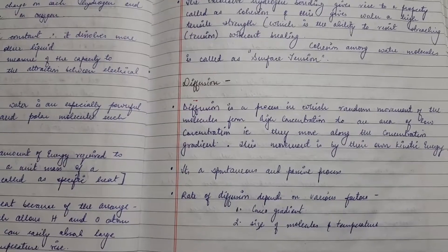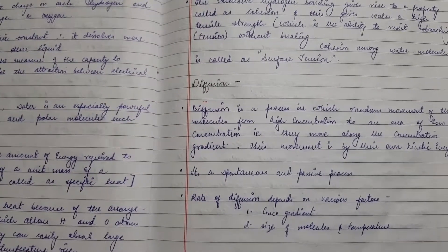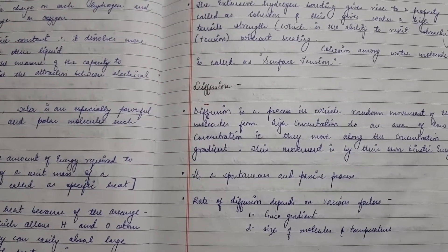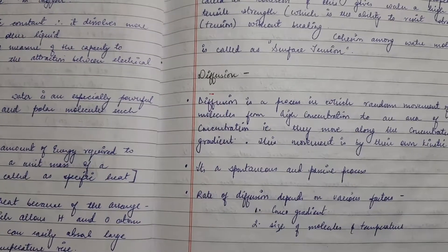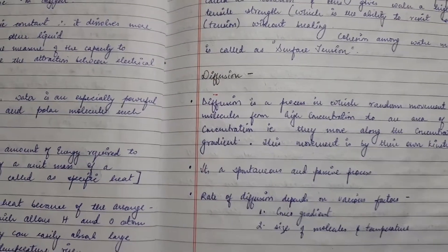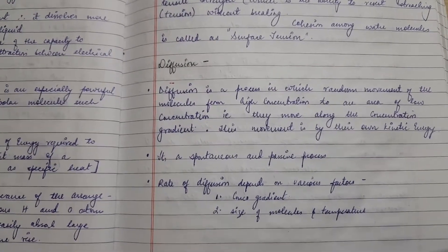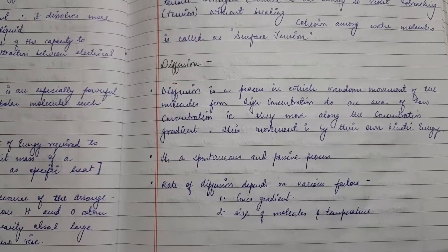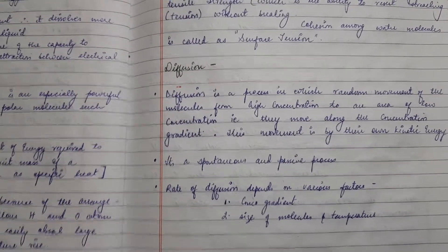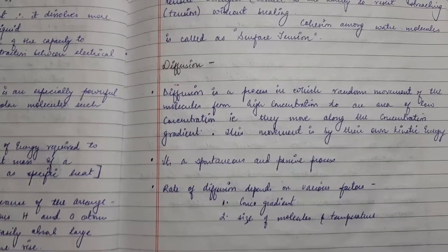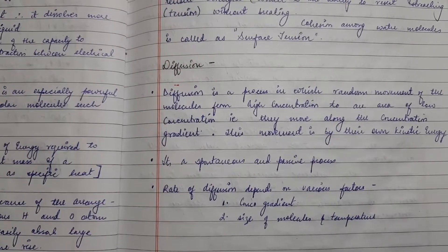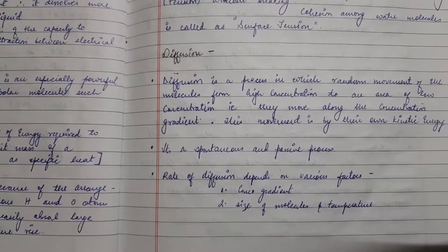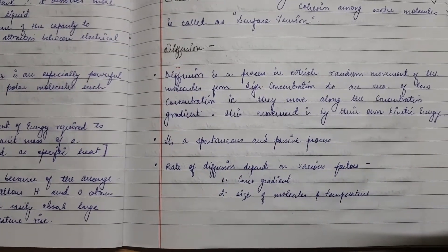Now we'll study diffusion, which is the process of random movement of molecules from an area of high concentration to an area of low concentration. We can take the example of a raisin — if we keep a raisin in water or in a high solute concentration solution, different reactions take place. In diffusion, molecules move along the concentration gradient from high concentration to low concentration.